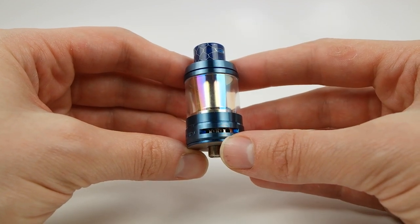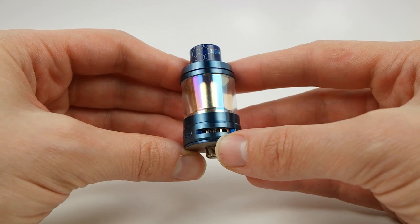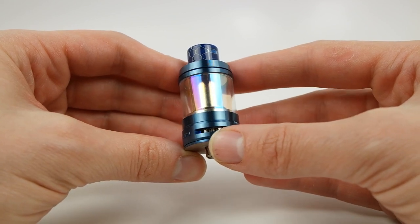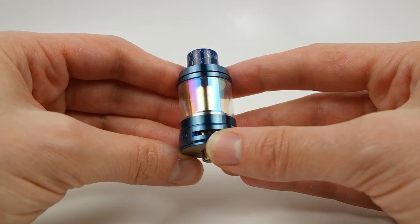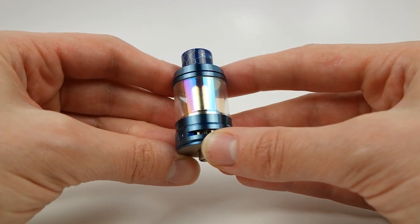The I-Sub B is the sixth generation of tanks from the I-Sub line, and they bring us the promise of high performance using much lower power with their new Plex 3D mesh coil.